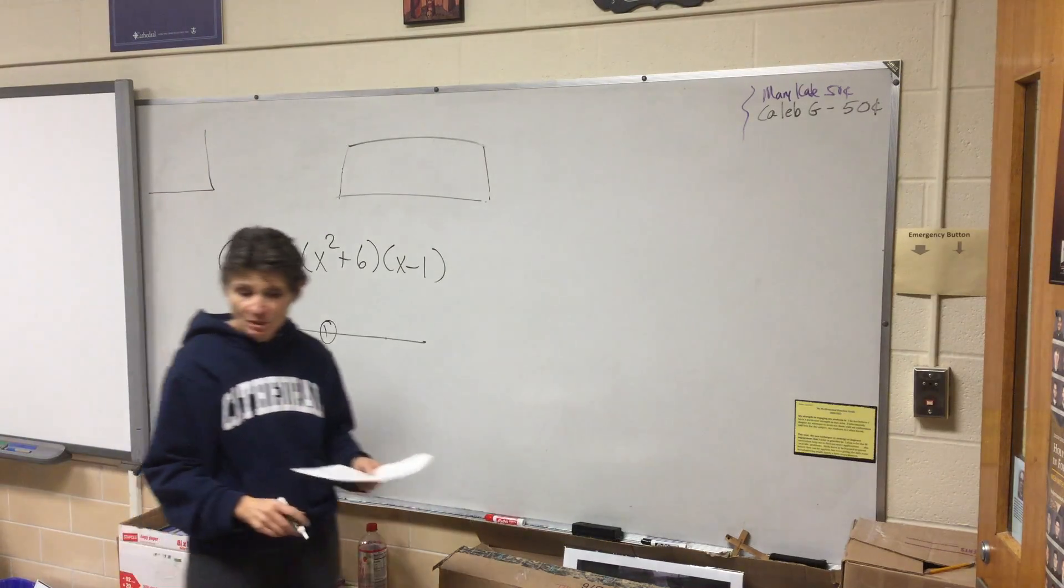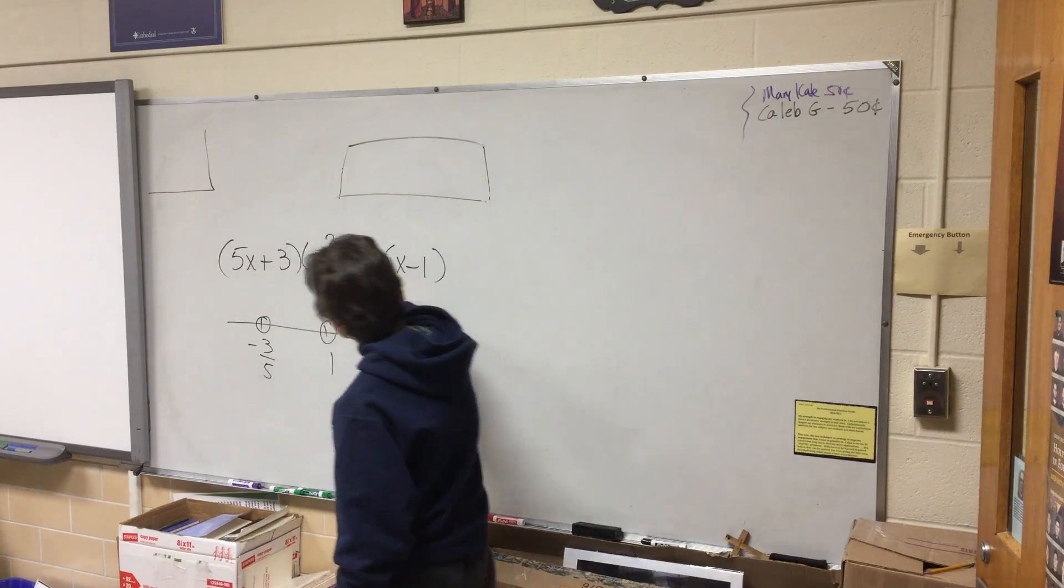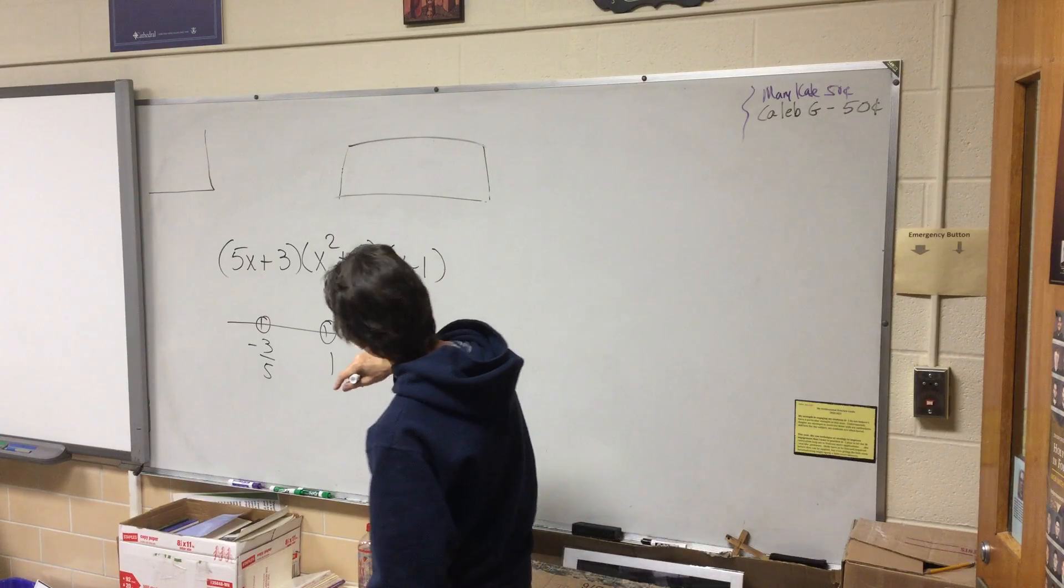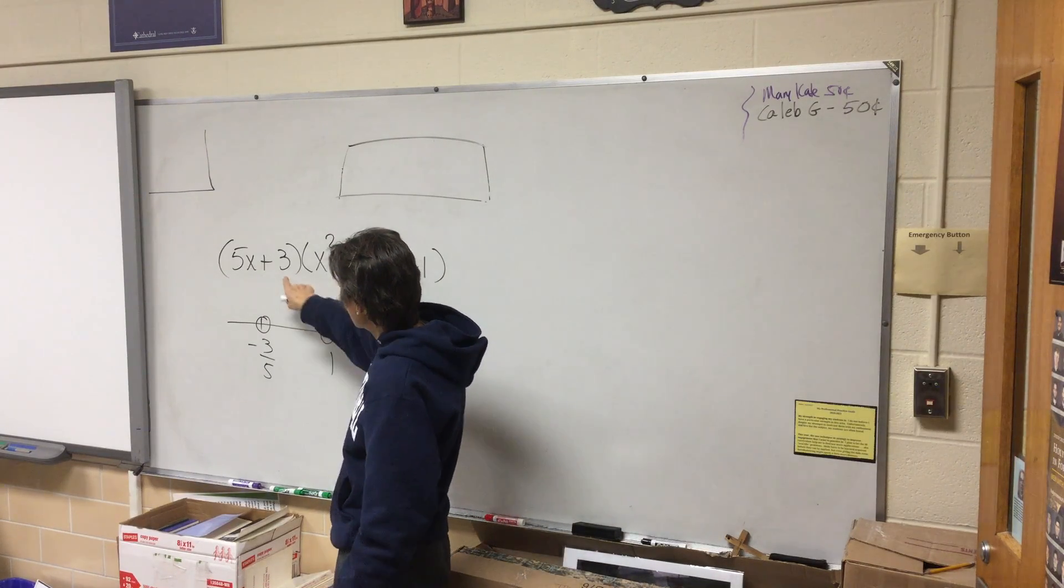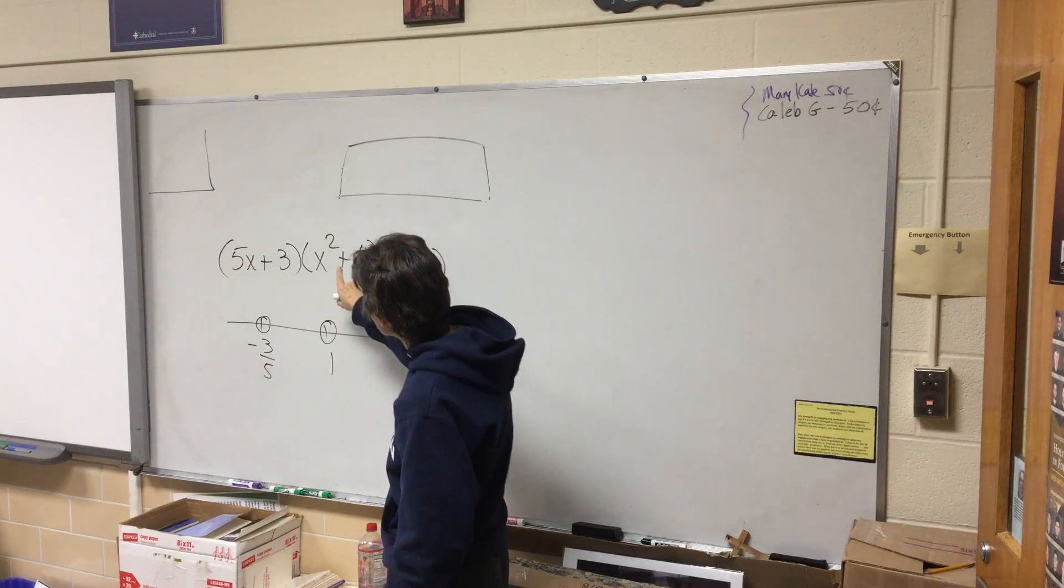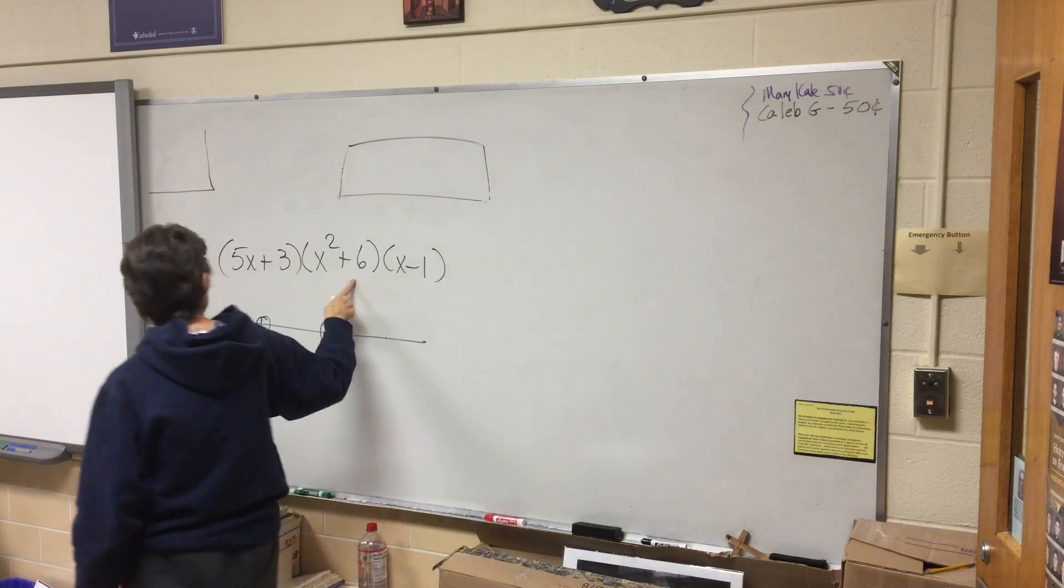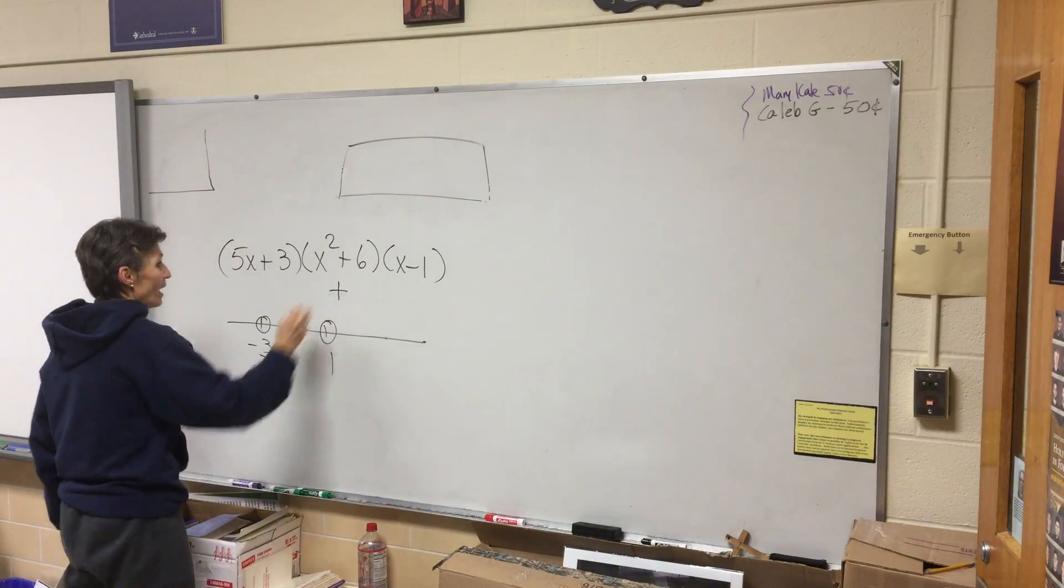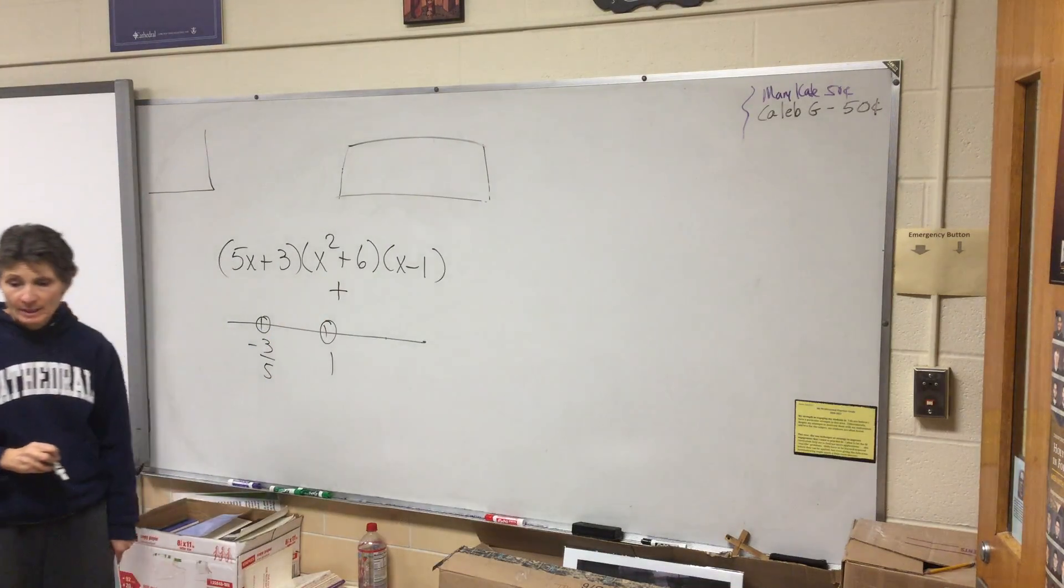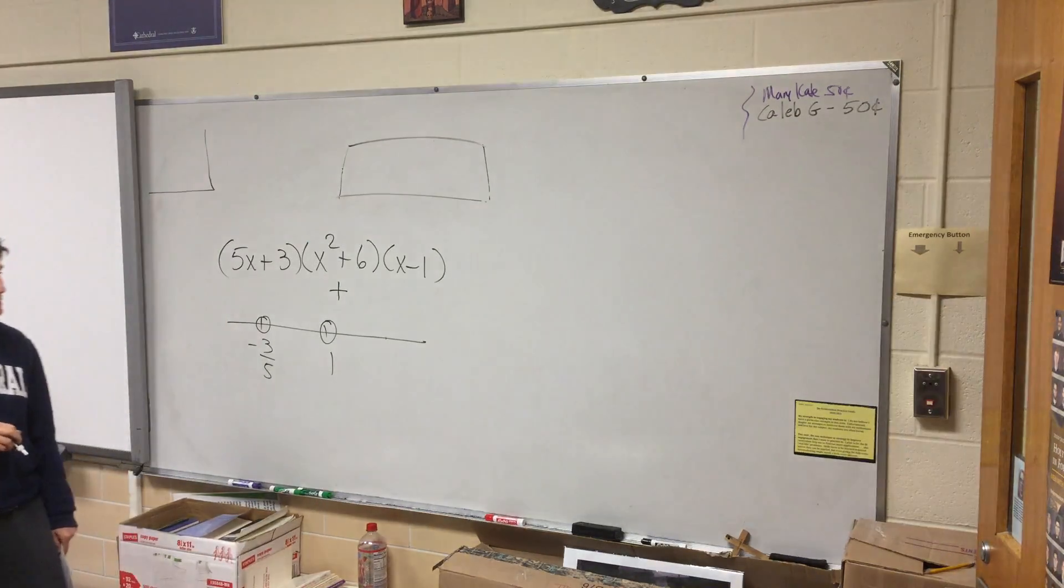Those are the only two things we can put on the number line because this will not have a zero. It would have to have an i. We don't want i's. So negative three-fifths makes that zero, and one makes that zero, but nothing makes that zero. This factor is always going to be positive.